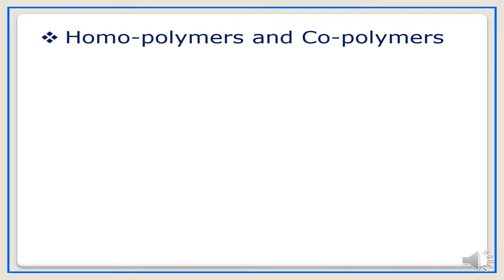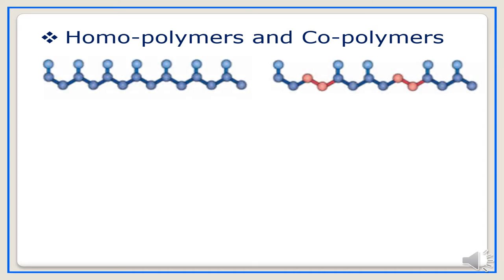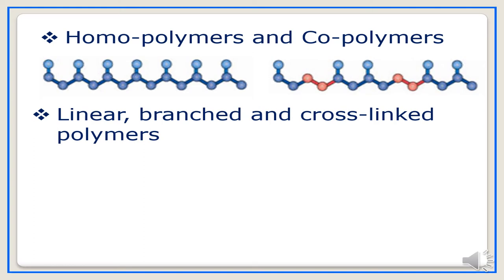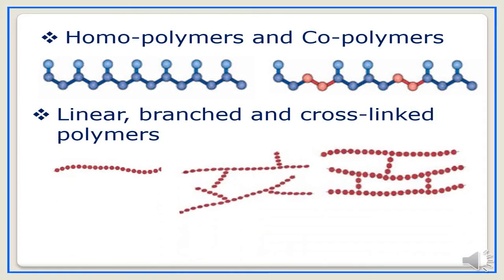The fifth way of classification is homopolymers and copolymers, based on how monomer units are linked in a polymer chain. If monomers of identical chemical structure are linked together to form a long chain, it is a homopolymer. If monomers of different chemical structure are in the main chain, it is a copolymer. The sixth way is linear, branched, and crosslinked polymers, based on structure. Linear chain polymers have monomeric units linked to form a long chain, branched polymers have additional side branches, and crosslinked polymers have crosslinkages between chains.